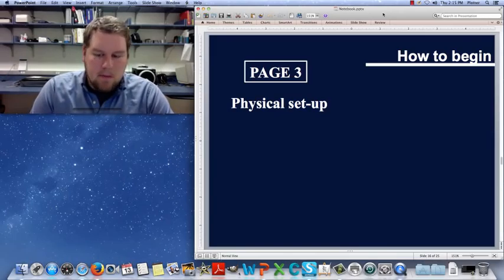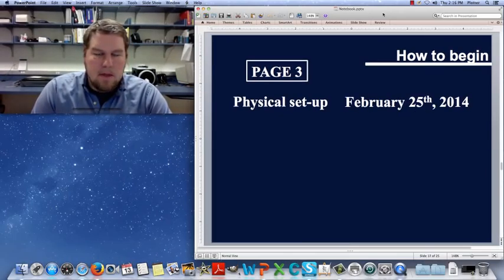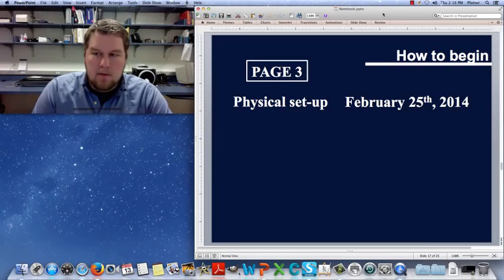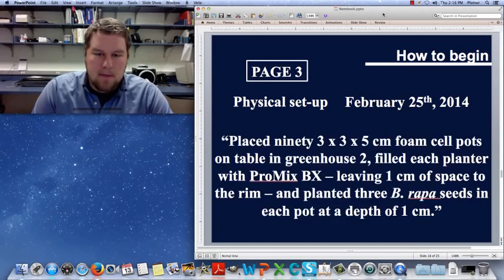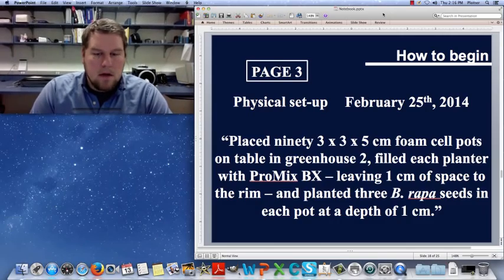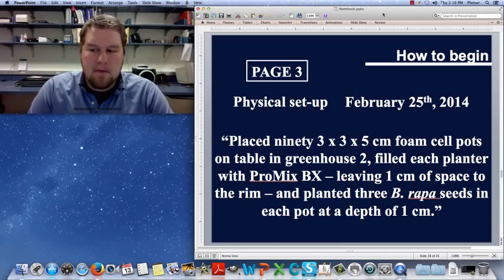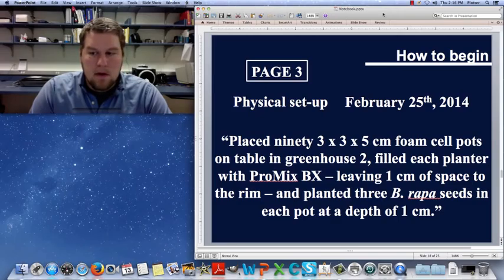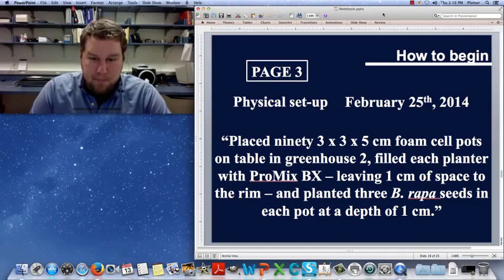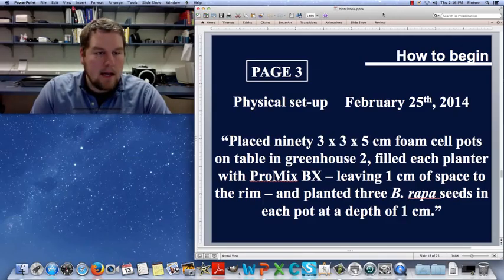So page three, I would begin with the physical setup. And this is something where I'd start writing the date. You want to start writing the date now to begin your experiment. So let's say I began mine on February 25th, 2014, and I would write exactly everything that I did to start my experiment. So for instance, in my example, I placed 90 3x3x5 centimeter foam cell pots on a table in greenhouse two, filled each planter with ProMix DX, leaving one centimeter of space to the rim, and planted three Brassica Rapas in each pot at a depth of one centimeter. So that's a general physical setup.